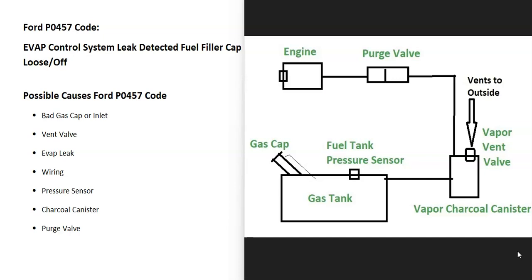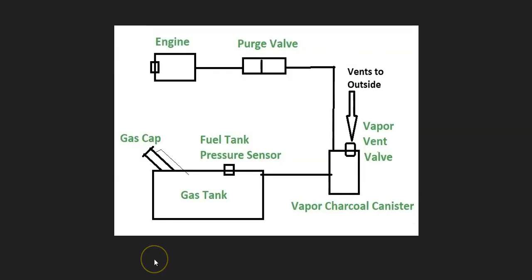Other possible causes include the vent valve, an EVAP leak somewhere inside one of the hoses, wiring issues, the pressure sensor, the charcoal canister, and possibly the purge valve. Usually if the purge valve goes bad you get another code.